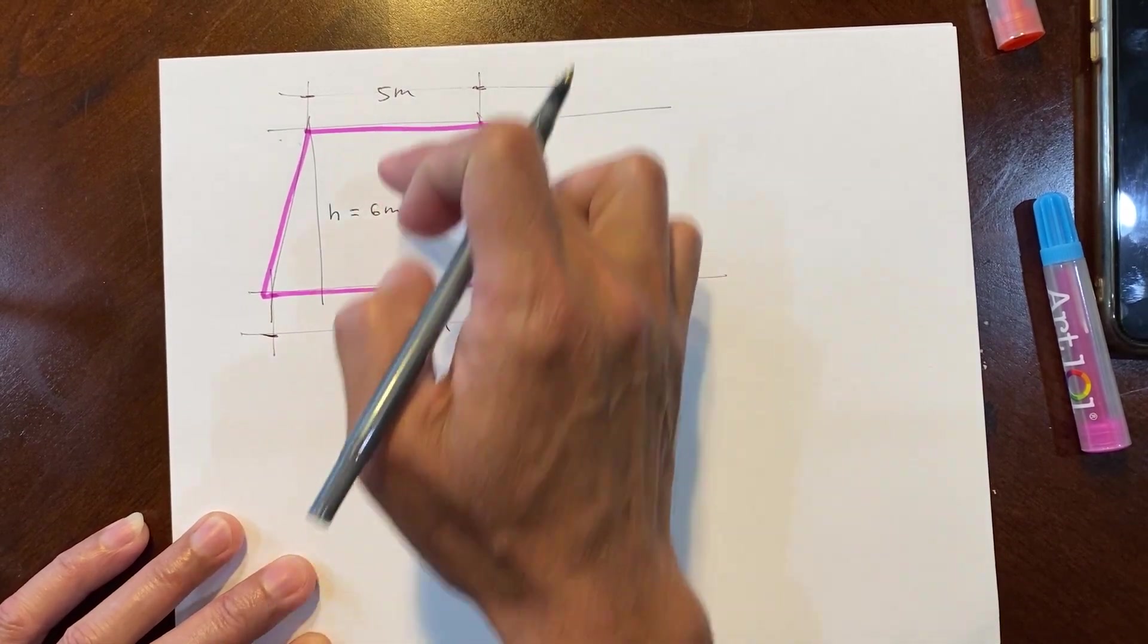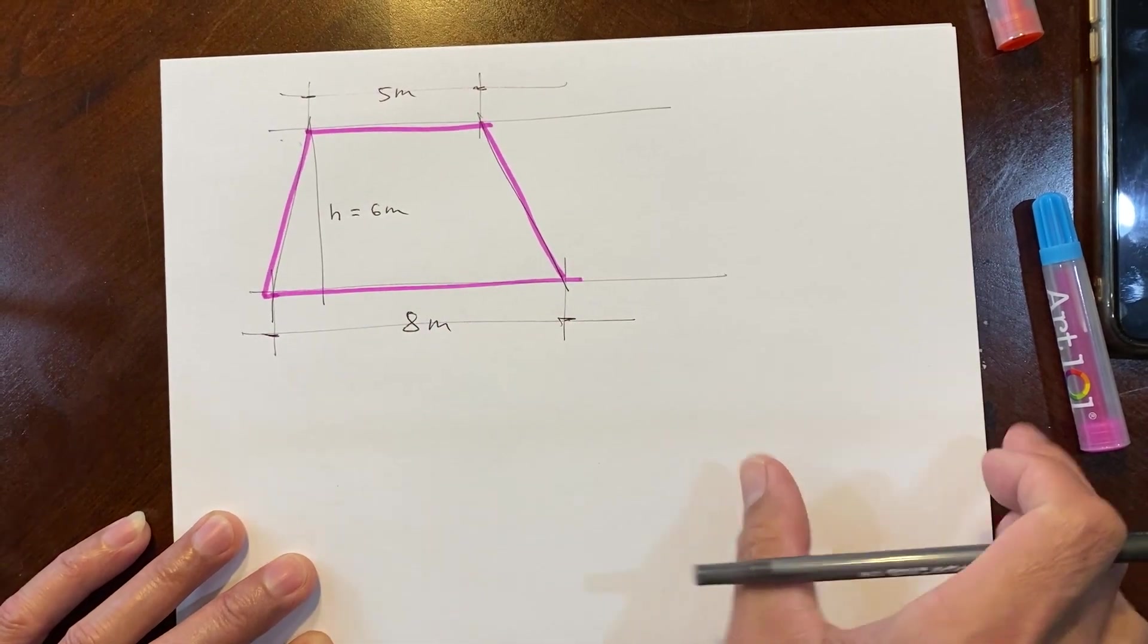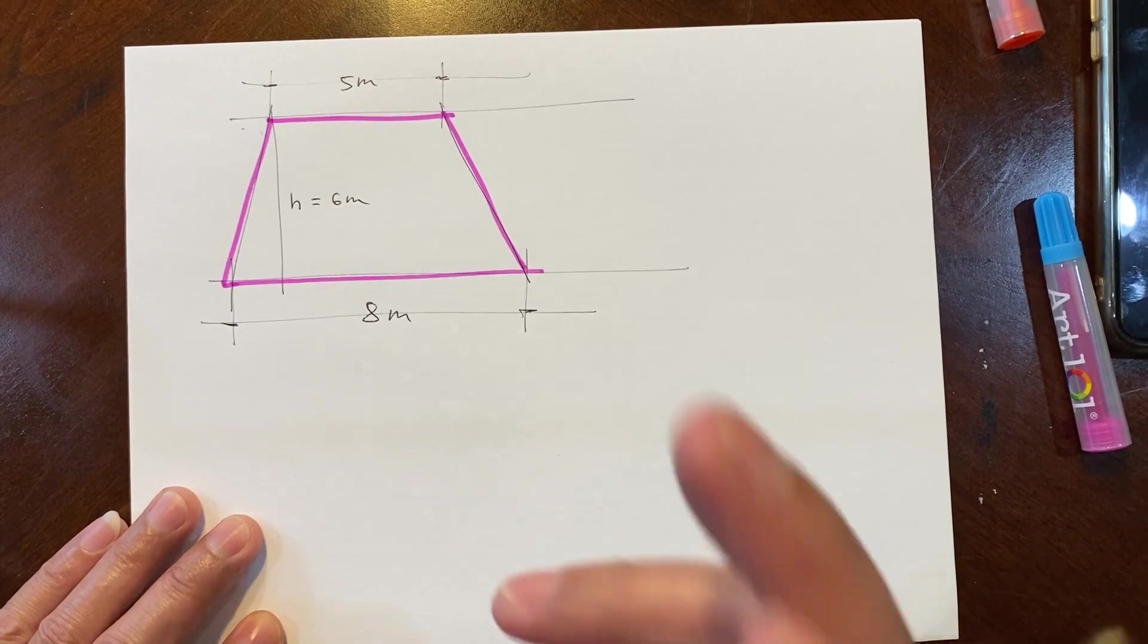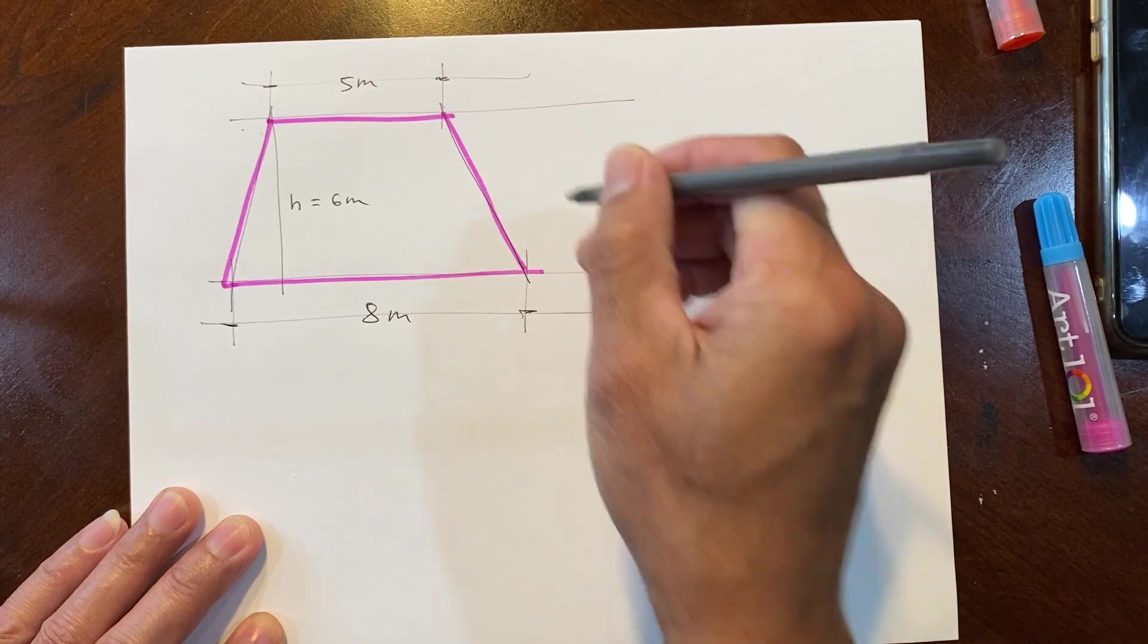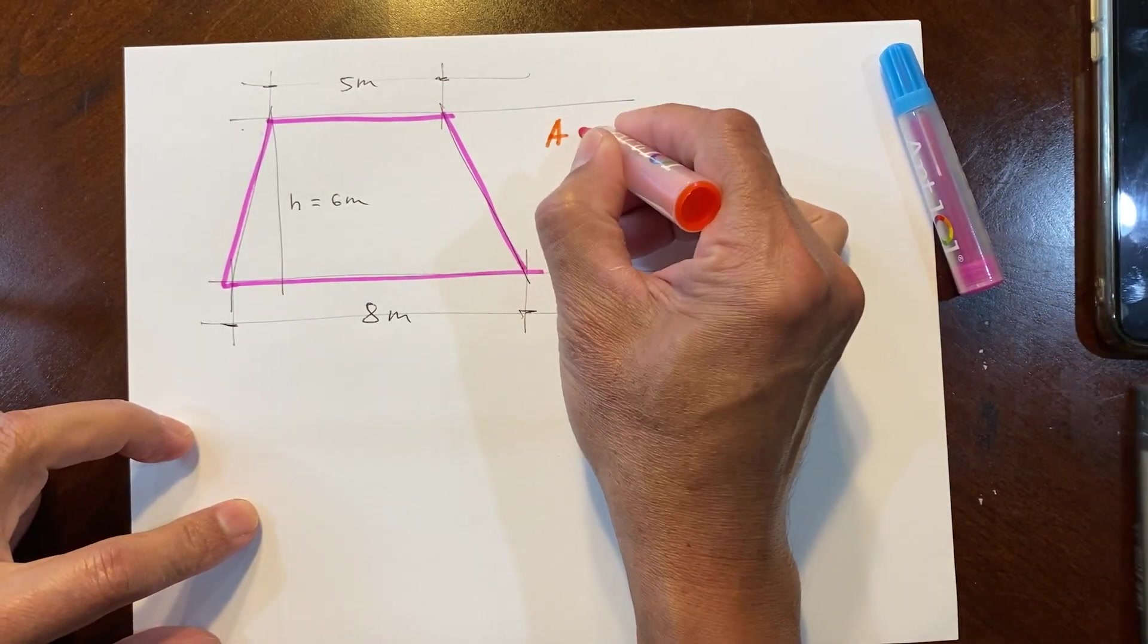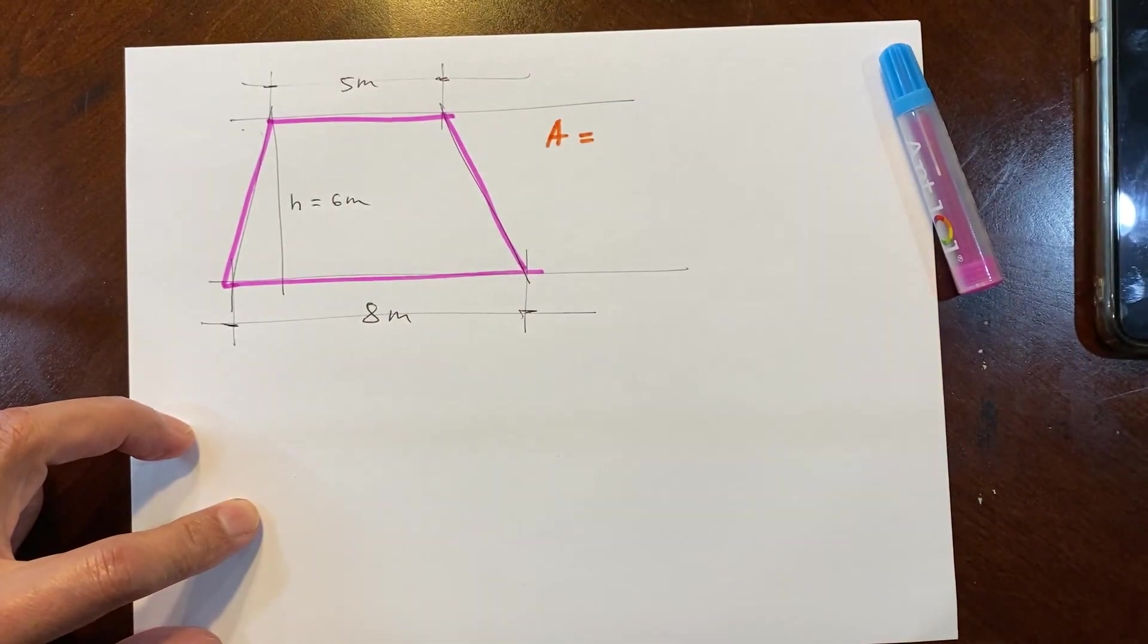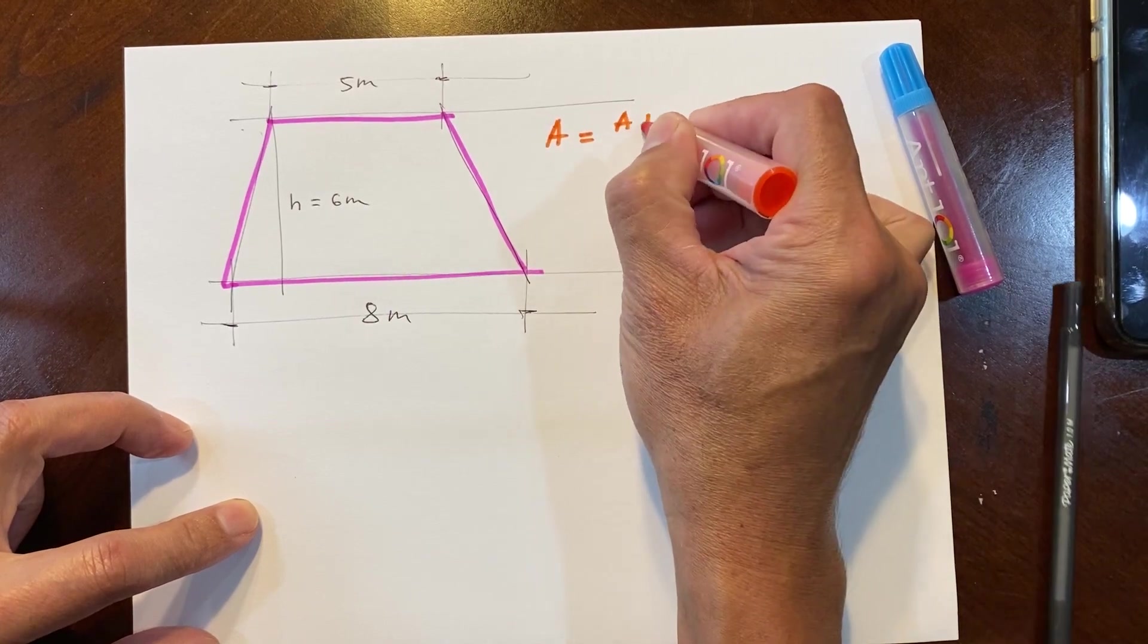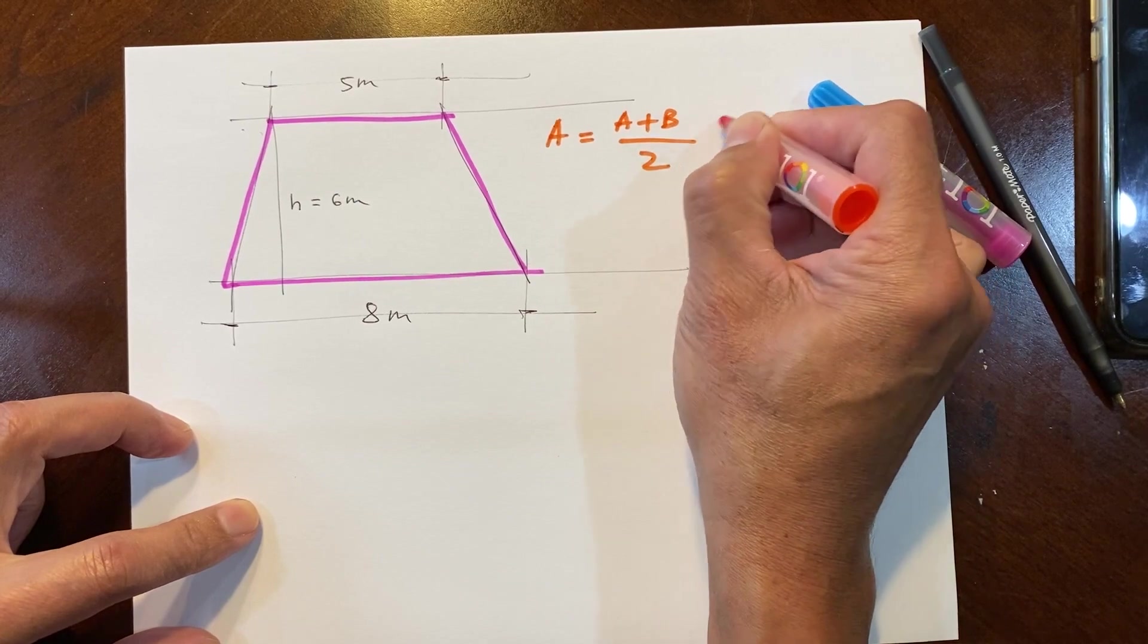Now we go on to the formula for finding the area of a trapezoid. Area equals A plus B over 2 times H.